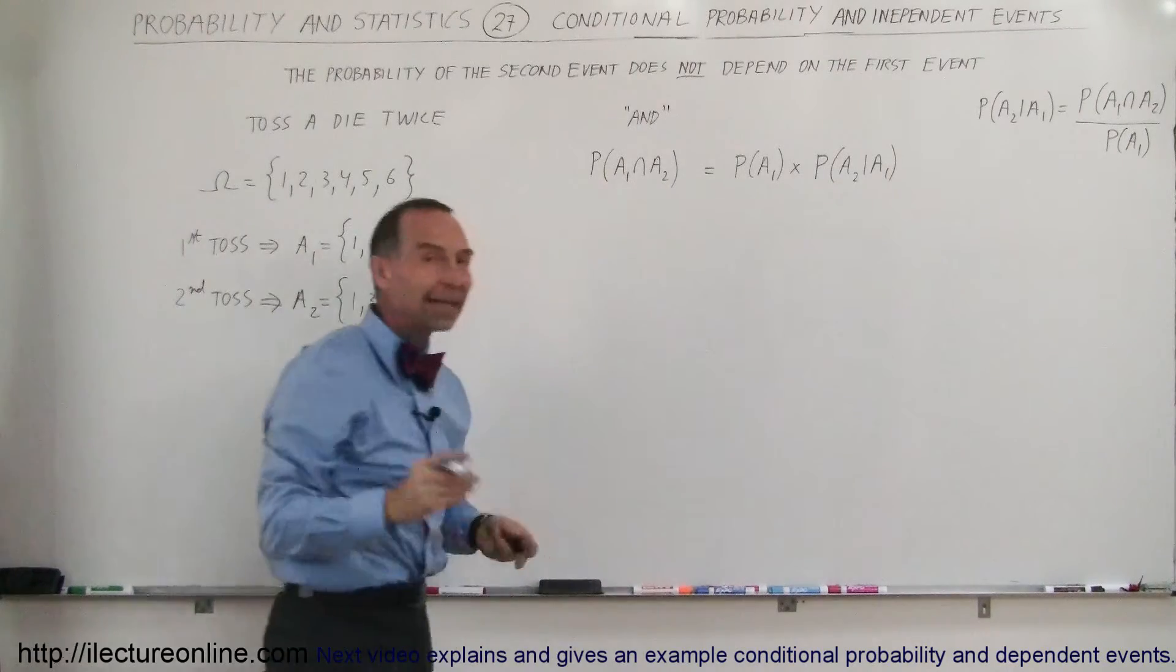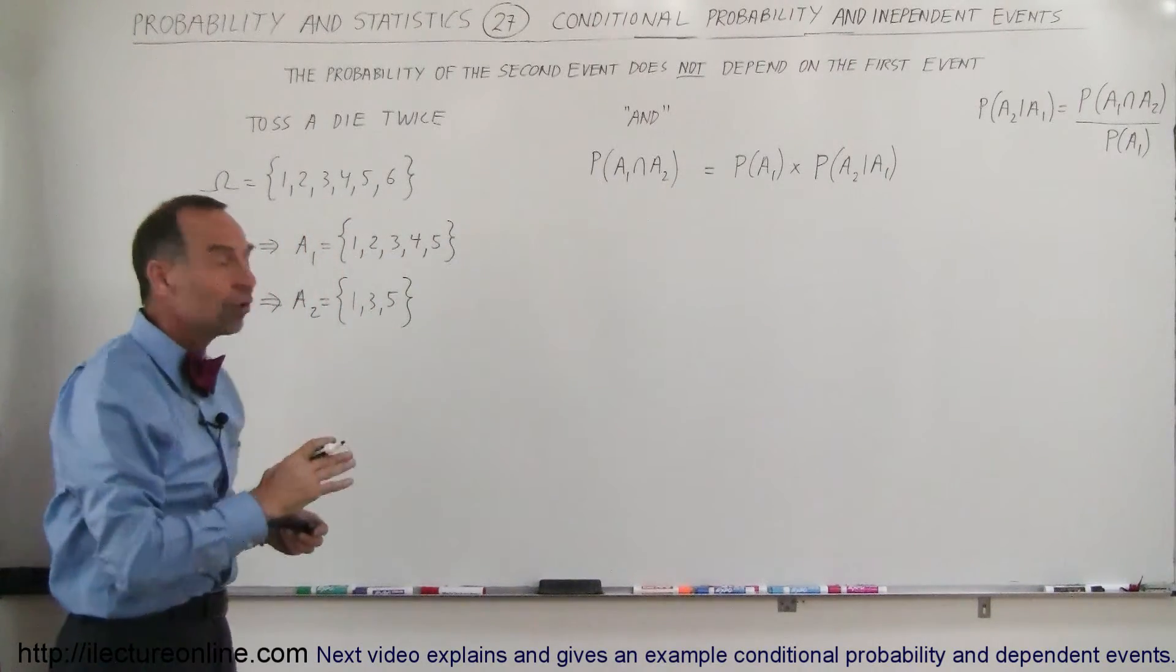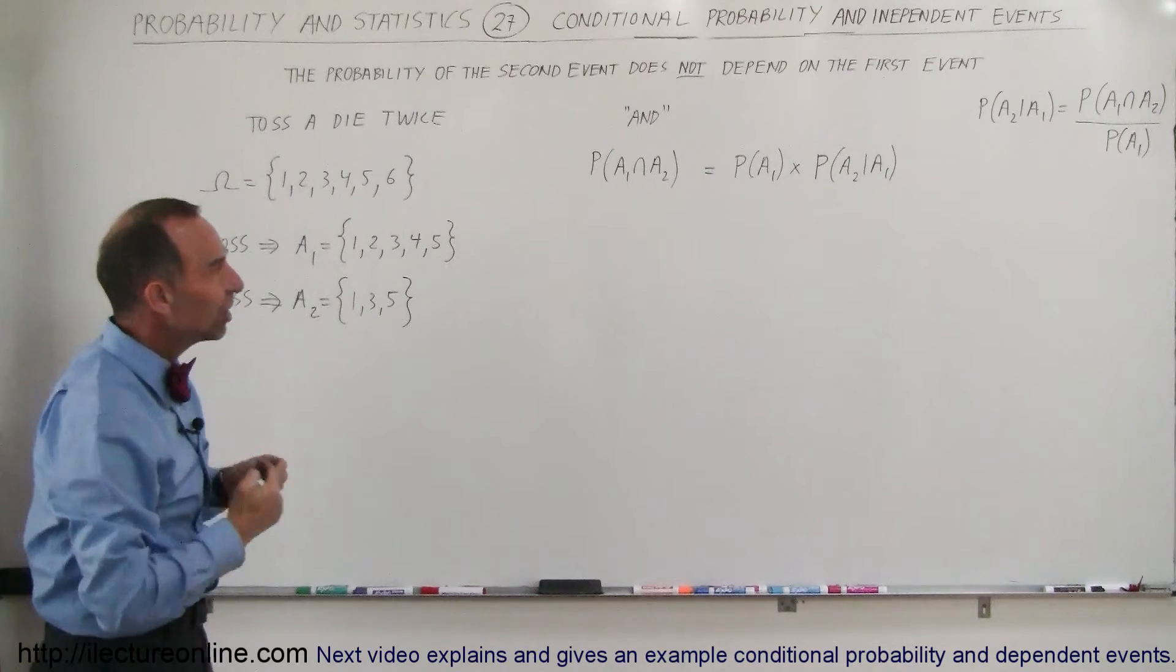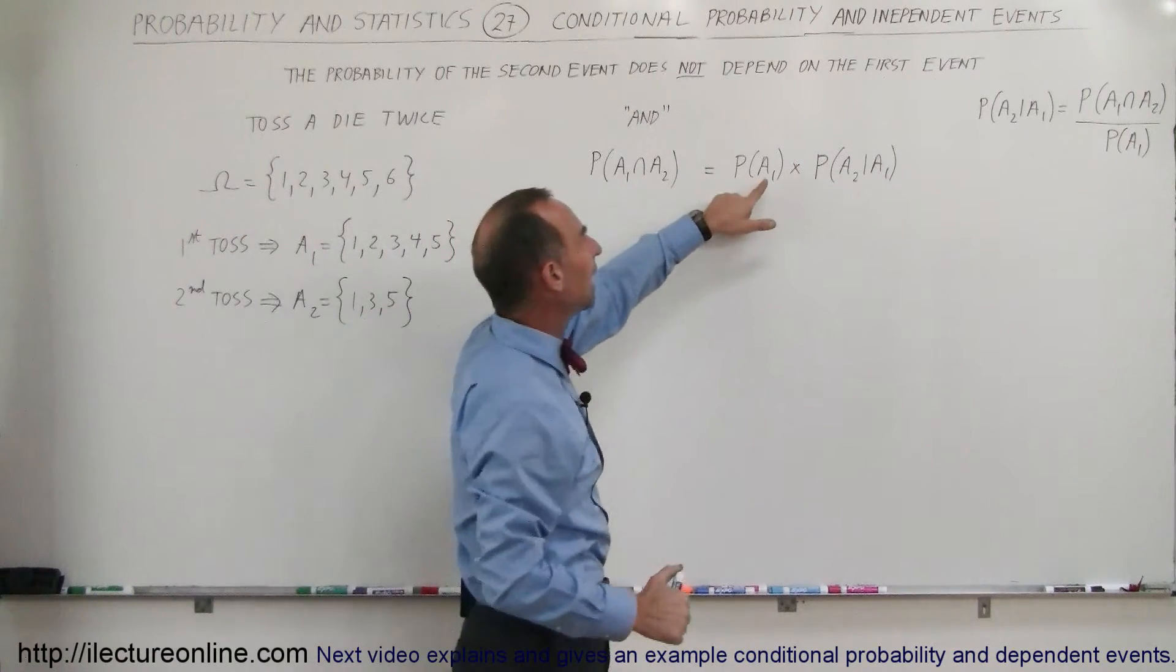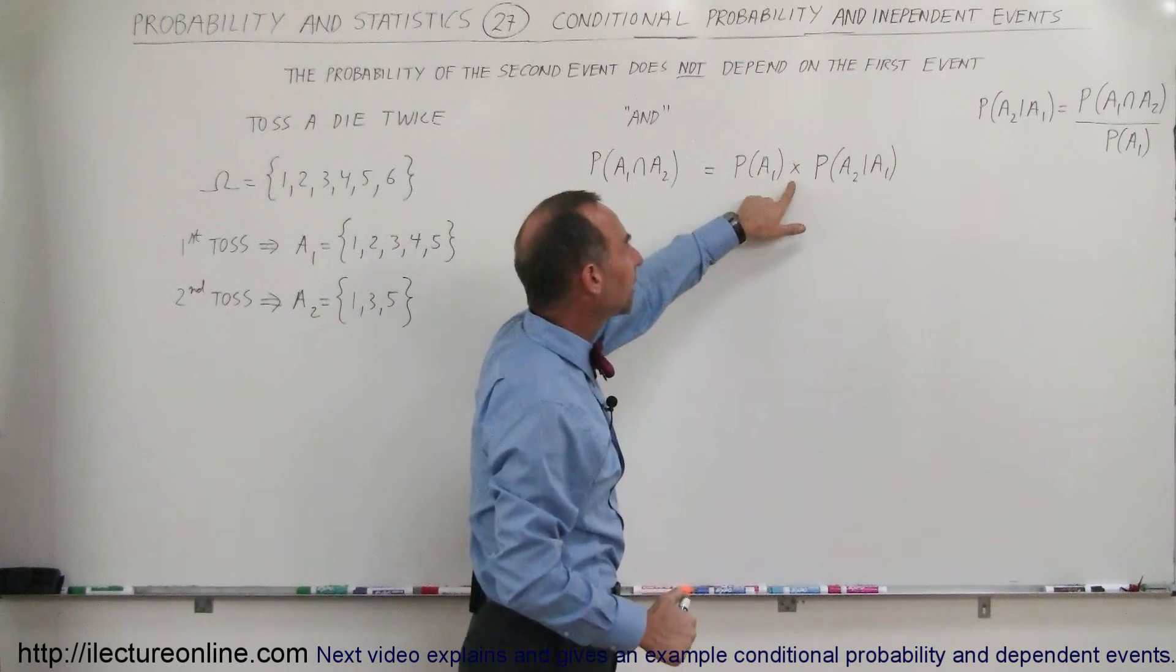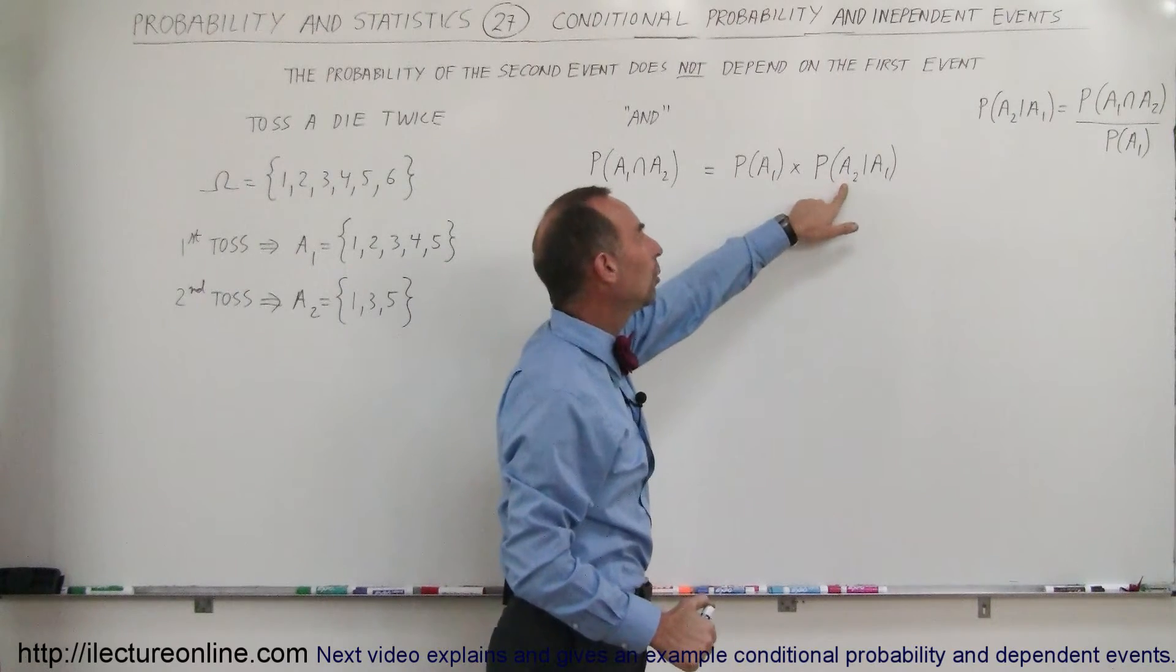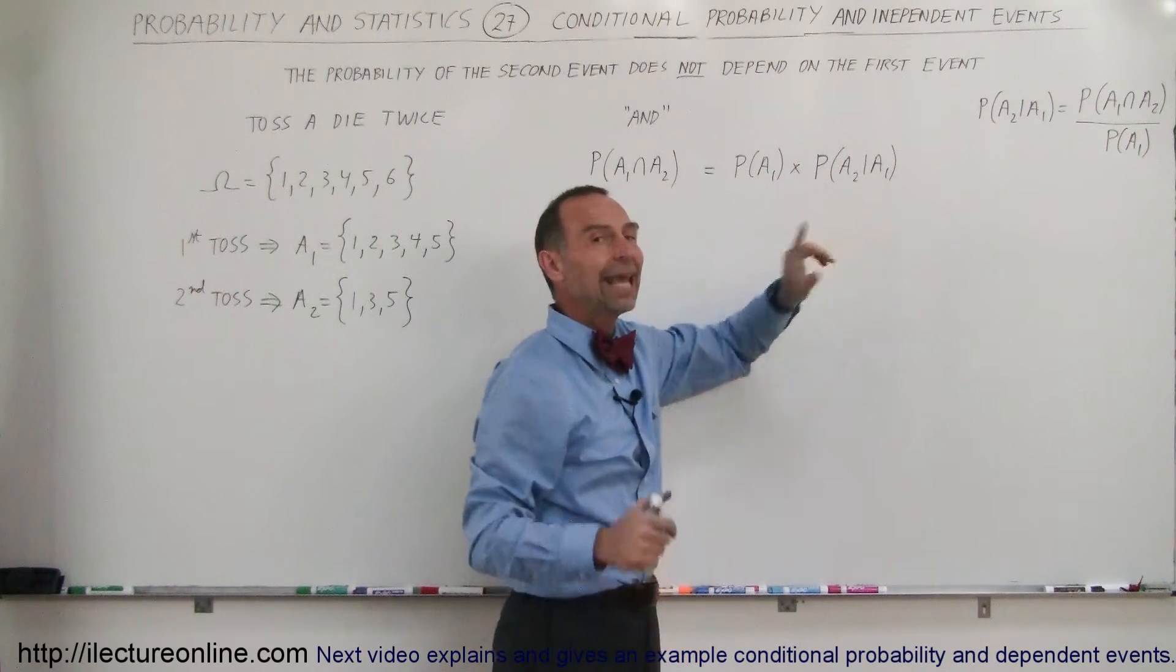And so the probability that event A1 and event A2 will occur is equal to the probability that event A1 will occur, multiplied times the probability that A2 will occur, dependent on event A1.